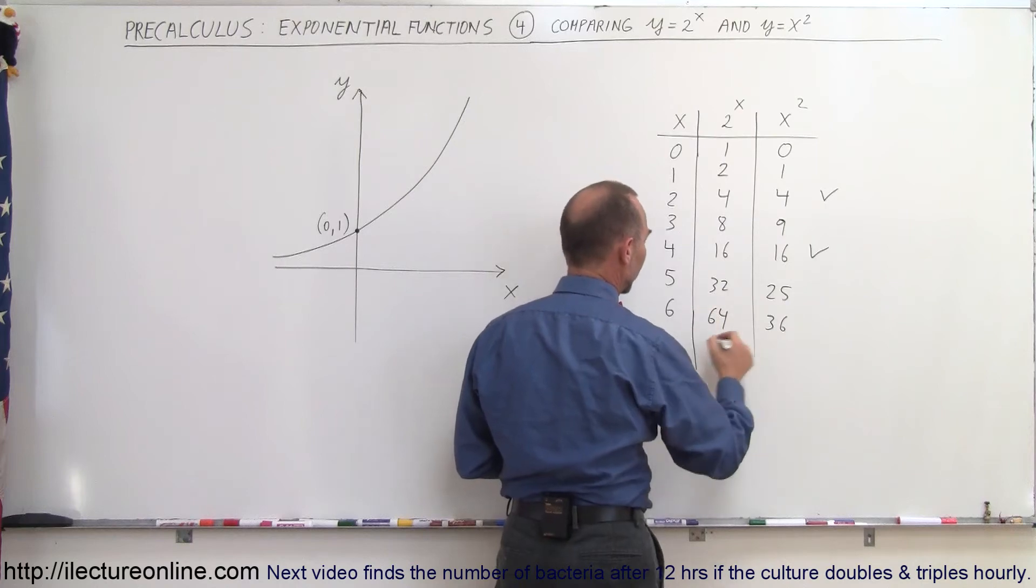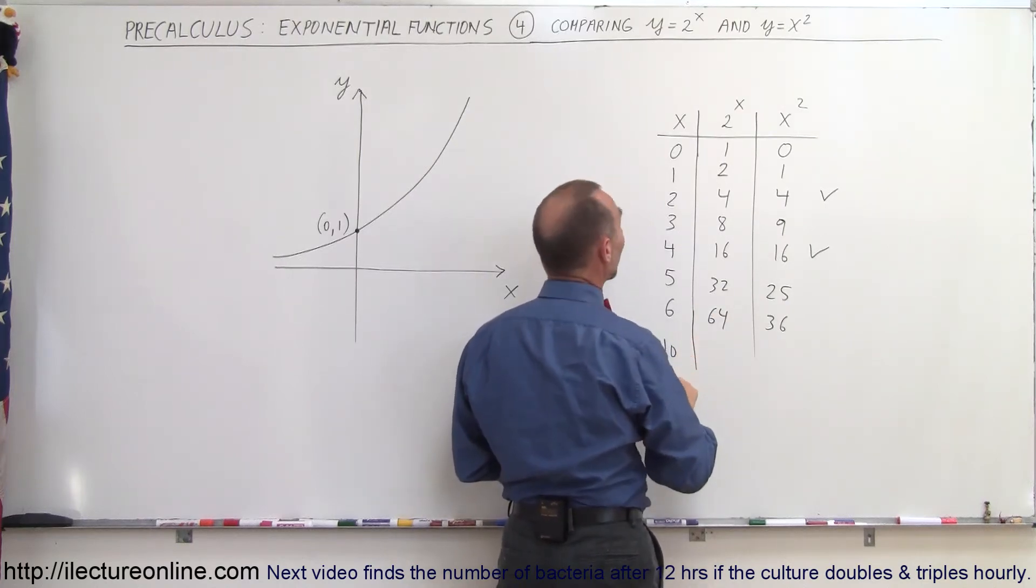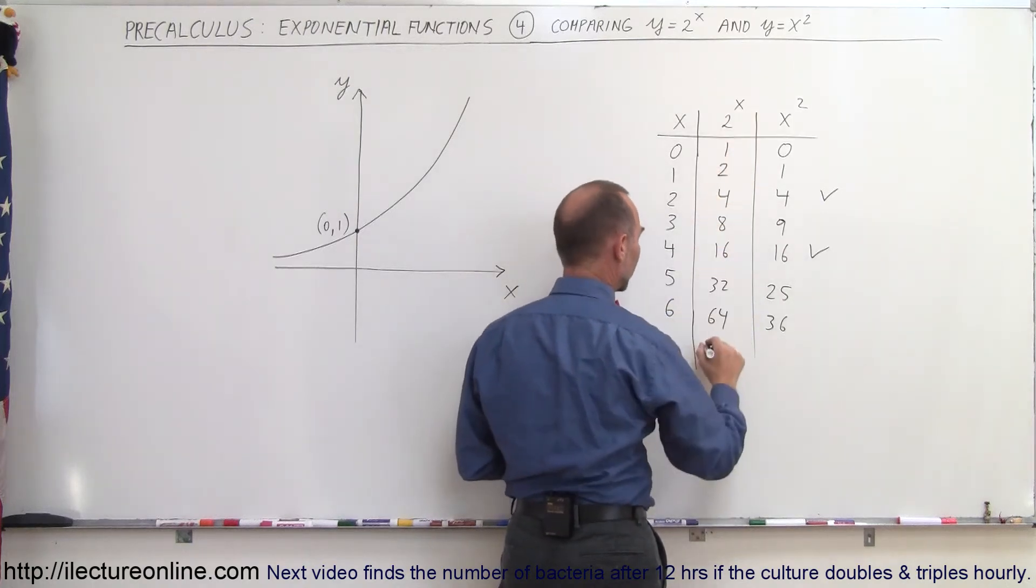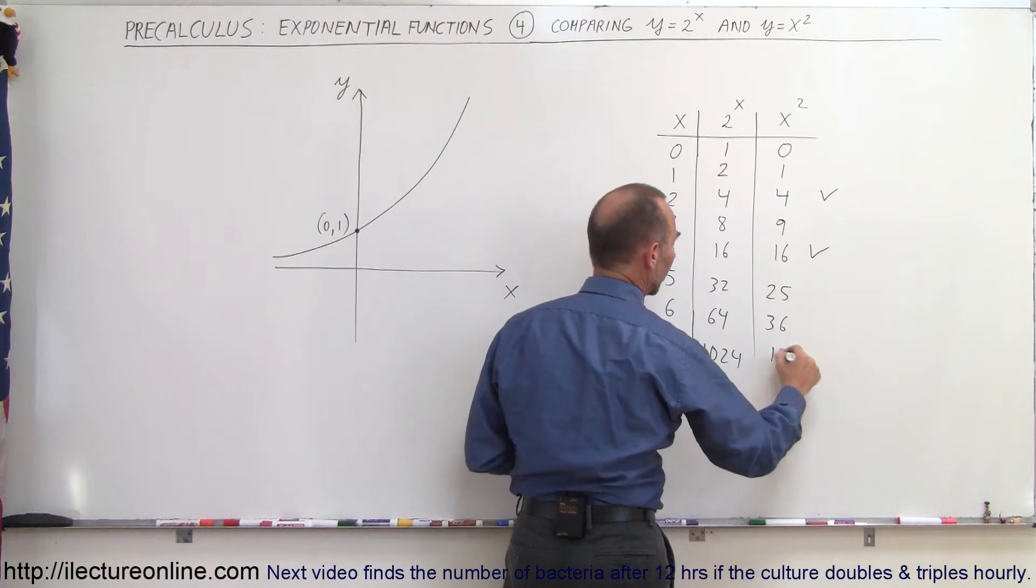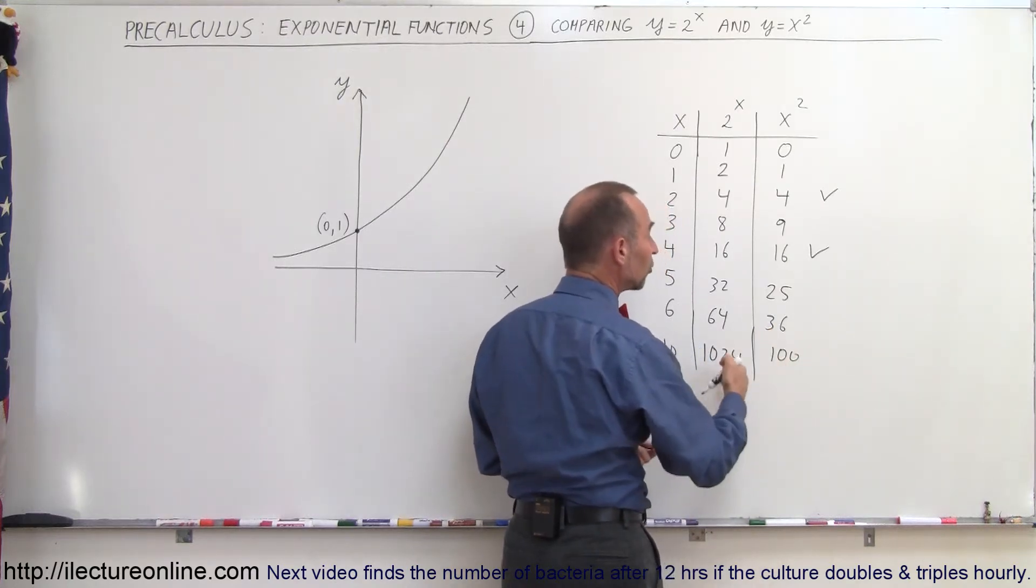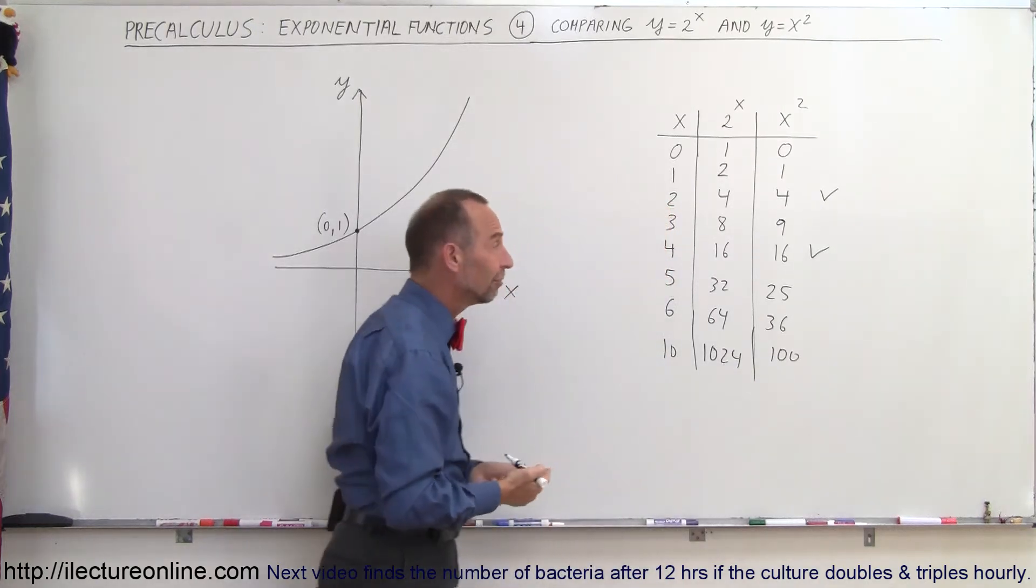And let's take one more, let's go all the way up to x equals 10. When x equals 10, 2 to the tenth power is 1024 and 10 squared is equal to 100. So you can see that the exponential function begins to take on much larger and larger values as x becomes larger than 4.